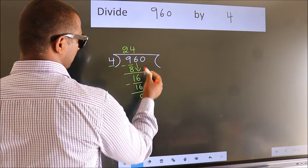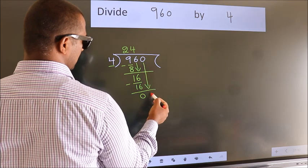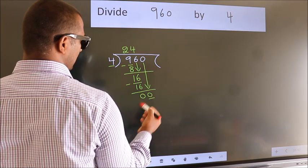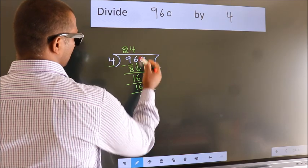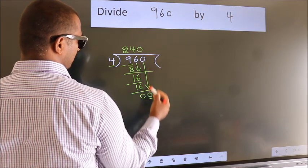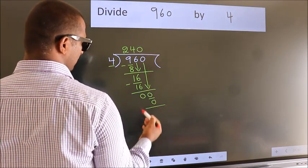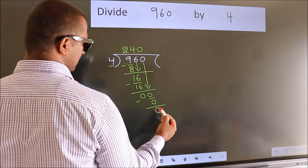After this, bring down the beside number. So, 0 down. So, 0. When do we get 0? In 4 table. 4 times 0. 0. Now, we subtract. We get 0.